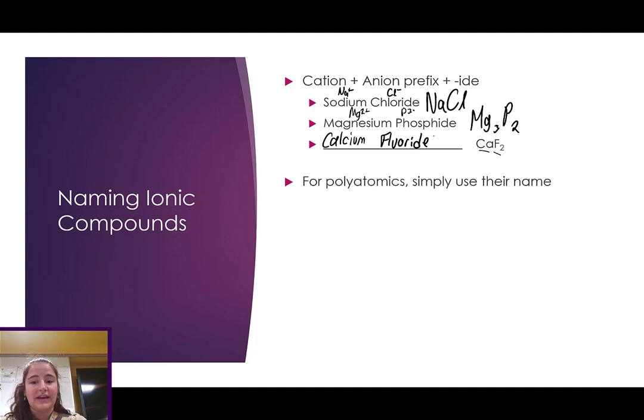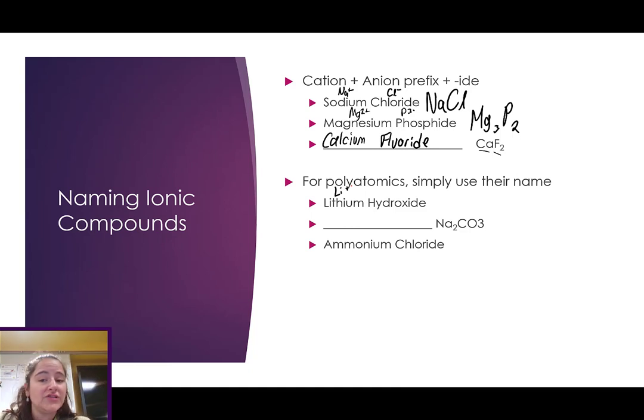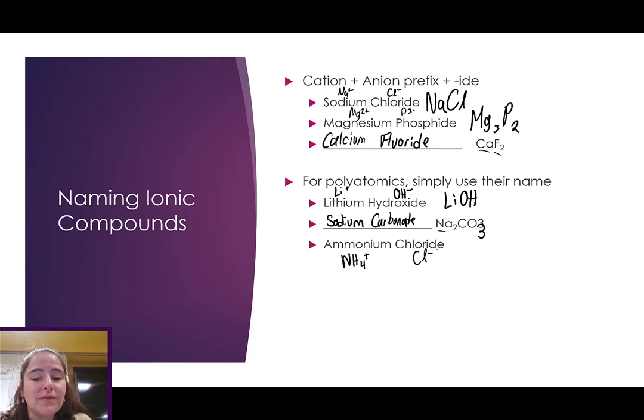Now, this can be a little bit more complicated for polyatomics. So, we have a table of our polyatomic ions, and if we're using any of those to form compounds, we just use their name. So, lithium is Li+. Hydroxide is the polyatomic OH-. So, the formula is LiOH. Na is sodium. CO3 is the polyatomic ion called carbonate. And then, ammonium is the polyatomic ion NH4+. Chloride is just a chlorine ion, so Cl-. So, ammonium chloride would be NH4Cl.